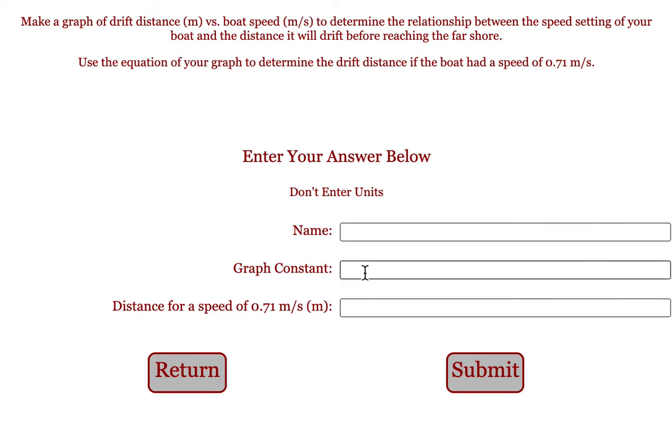After you get your graph and your graph constant, you're going to calculate the drift for a speed that you did not test. It will tell you a speed. Plug it into the equation you get from your graph and figure out how much it would have drifted downstream.